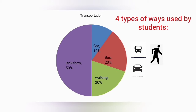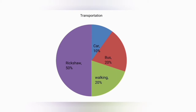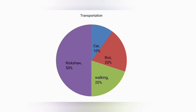Of the four types of vehicles, rickshaw has the highest percentage. Fifty percent of students use rickshaw to come to school, while twenty percent of the students use bus. Another twenty percent of the students use no vehicles to come to their school, as they come to school on foot.